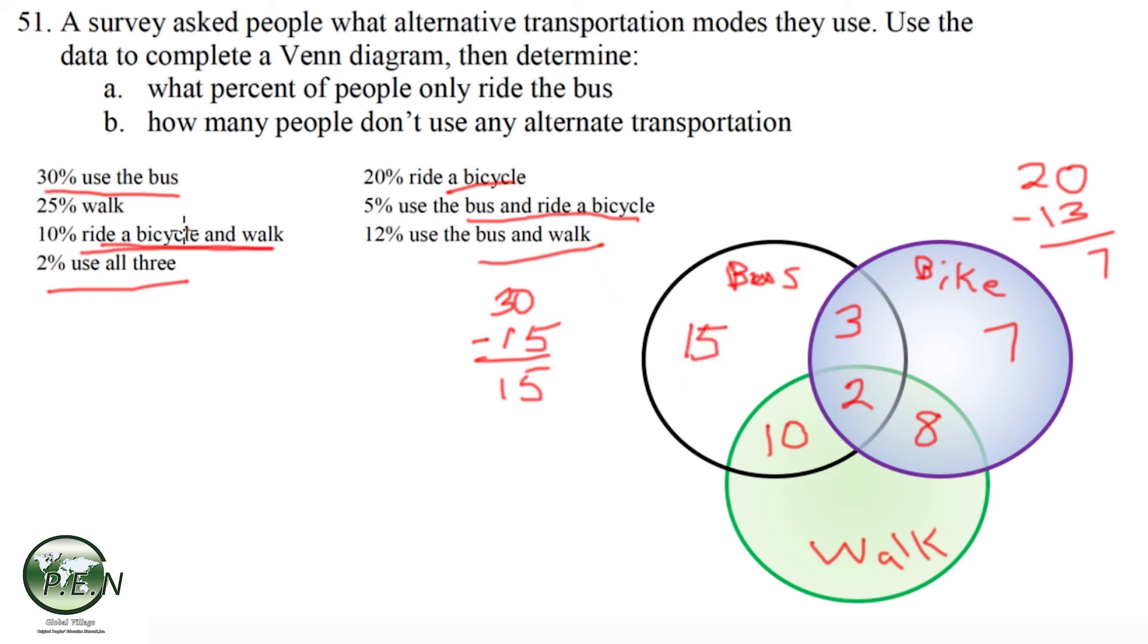For those who walk, 25% walk. So we have 25% here, we've accounted for 8 and 2 is 10 plus 10, there's 20 already counted for. So we subtract that off and find that there's 5 left over here.